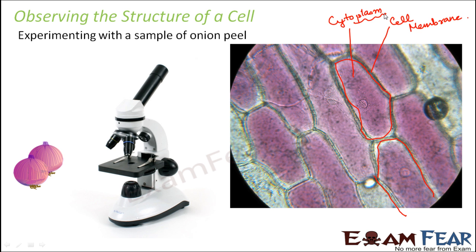Plasma means something fluid, and cyto relates to cell — so cytoplasm is the fluid present inside the cell. The entire space inside the cell is filled with cytoplasm. The cell organelles such as mitochondria and Golgi apparatus are all embedded in the cytoplasm. Another prominent structure you will observe is near the centre of the cell — that is the nucleus. With a high-resolution microscope, you would also be able to see the individual cell organelles.